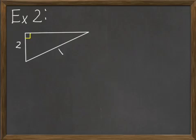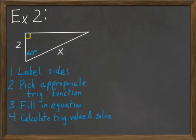Alright, so let's look at our last example. I'll walk through the steps one more time so you guys can get a good idea of what's going on. First we need to label the sides. The 2 is the adjacent because it's next to the 60 degrees, and x is the hypotenuse.